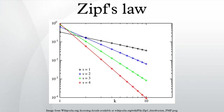Thus the most frequent word will occur approximately twice as often as the second most frequent word, three times as often as the third most frequent word, etc. The rank frequency distribution is an inverse relation.